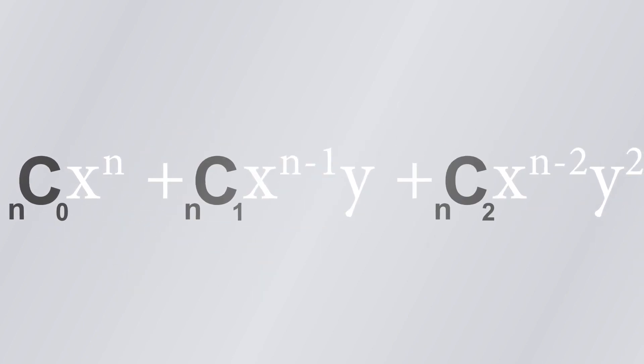Which tells you how many times that quantity, say x to the n or x to the n minus 1 times y, appears when you do this expansion. And those coefficients are exactly these binomial coefficients. The bi in binomial refers to the fact that we have these two quantities, x and y, that we're doing an expansion of.